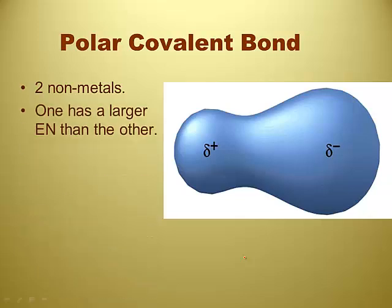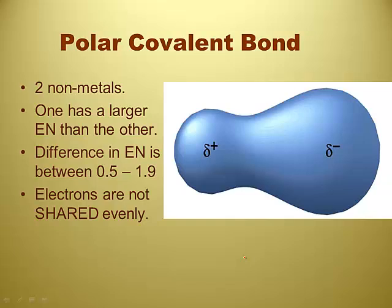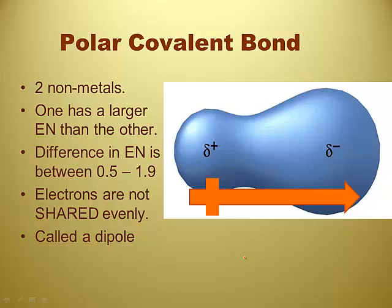Polar covalent bonds tend to be two nonmetals. One is going to have a larger electronegativity, enough so that the difference is between 0.5 and 1.9. Electron clouds are going to scoop a little closer to the more electronegative atom — so the electrons don't get shared evenly — and we call this a dipole or dipole moment. Sometimes people like to draw vectors instead of the sigma symbols, and the vector always points to the negative end. In chemistry, we draw a vector with a plus sign on one end to indicate where the positive end is.